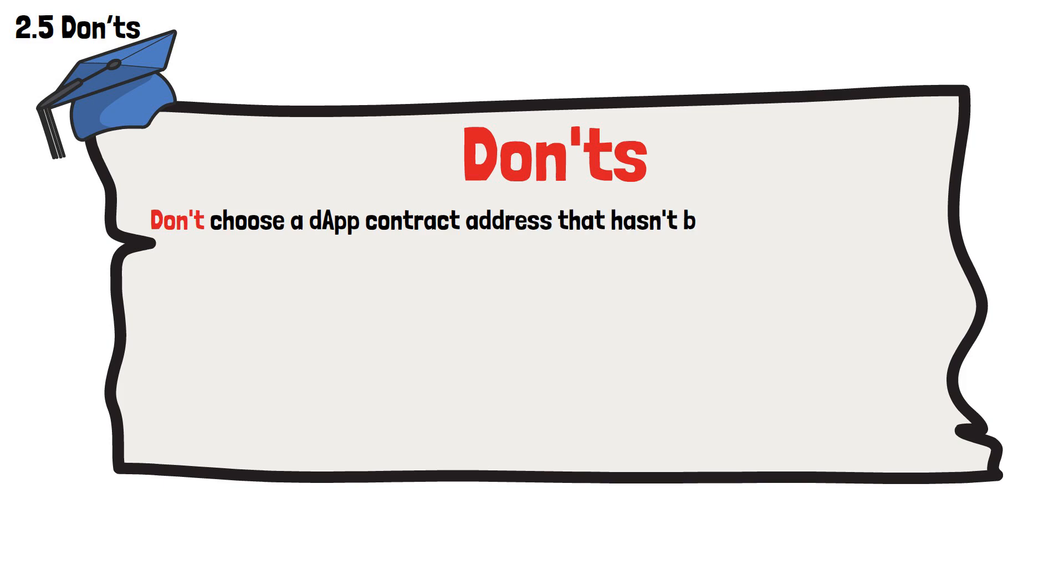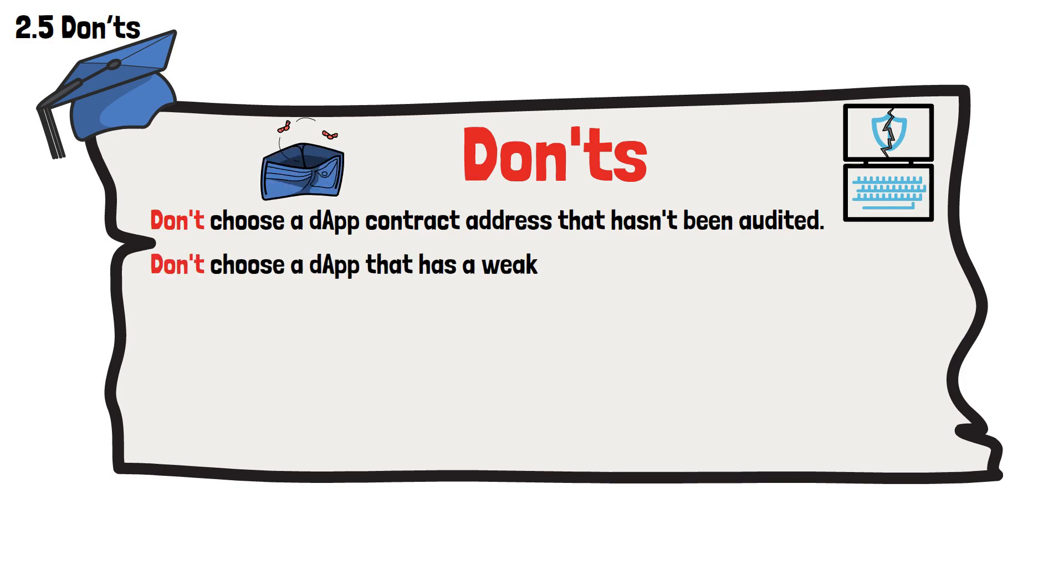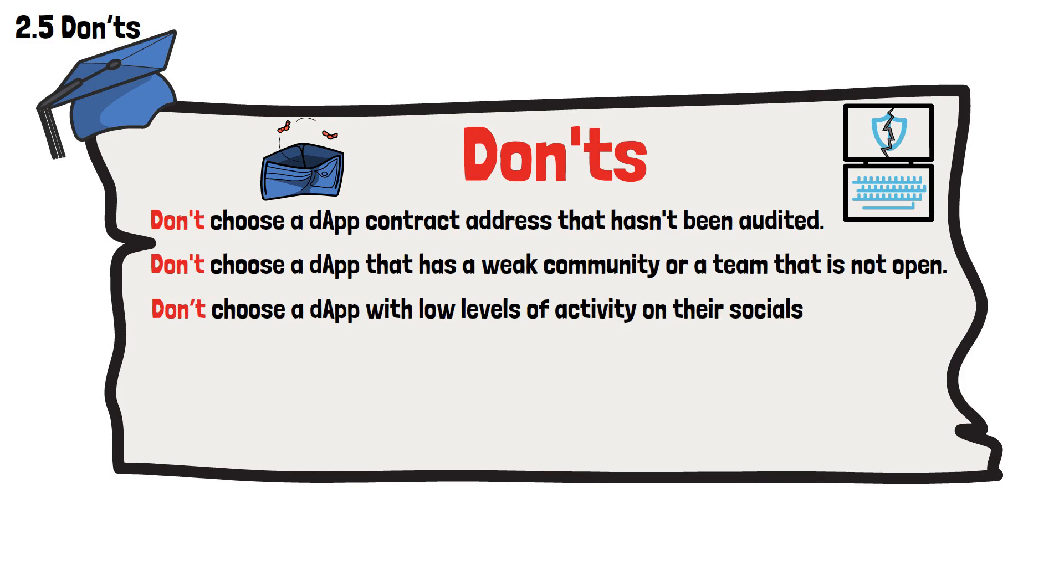Don't choose a dApp contract address that hasn't been audited. Without an audit, there is a higher risk of security breaches, loss of funds and other issues that can harm users. Don't choose a dApp that has a weak community or a team that is not open and transparent. Don't choose a dApp with low levels of activity on their socials.